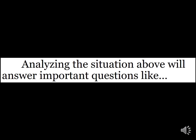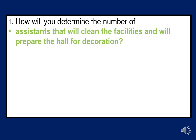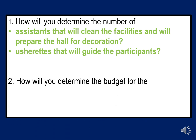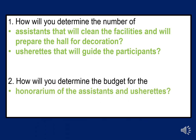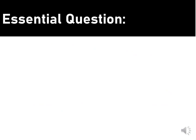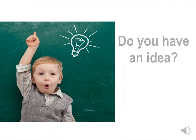Analyzing the situation above will answer important questions like: How will you determine the number of assistants that will clean the facilities and prepare the hall for decoration? The number of ushers that will guide the participants? How will you determine the budget for the honorarium of the assistants and ushers? The ingredients that will be used in the preparation of all the dishes? And for those questions, how can the unknown quantities be solved? Do you have an idea? Let us now explore variations.